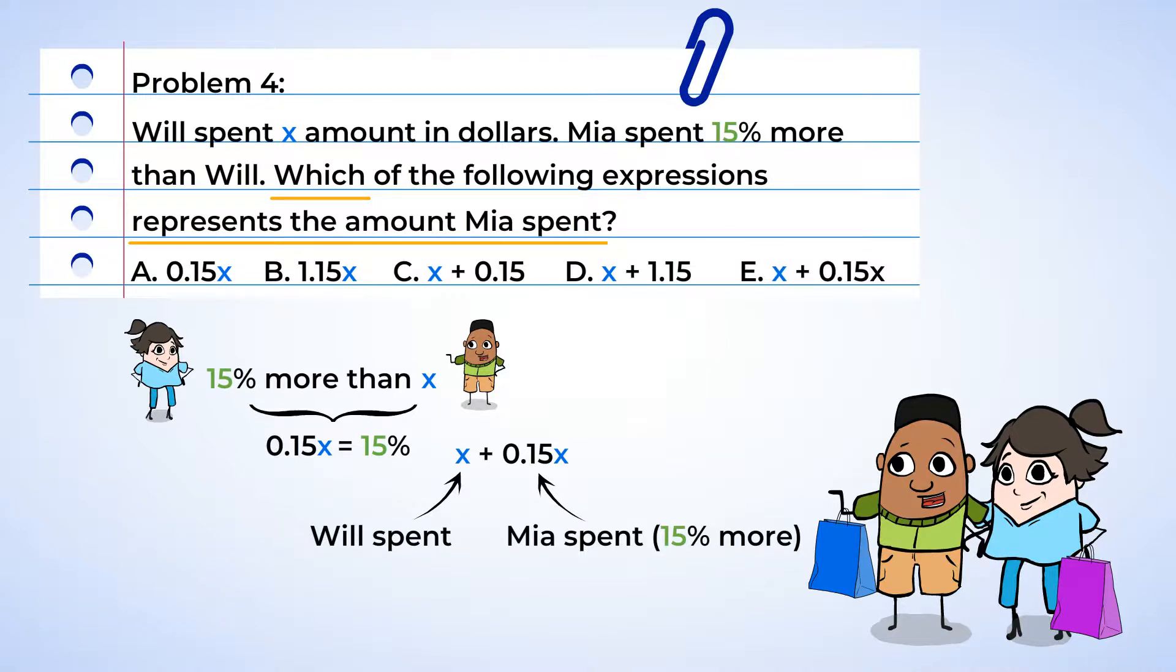But I bet I can rewrite this expression. We have 1X and we want to add another 15 hundredth X. So 1 plus 15 hundredth is equal to 1 and 15 hundredths. We can simplify this expression to 1.15 multiplied by X. Wonderful. There are two expressions that represent the amount Mia spent, B and E.